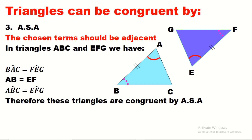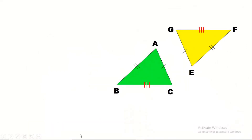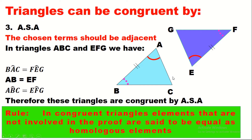Now, if you remember from the beginning, congruent triangles must have the same measures for all of their elements. What about the elements we didn't use in our proof? We say they are also equal as homologous elements — we deduce them equal, though they were not given. For example, after proving congruence by Angle-Side-Angle, the remaining angle — ACB-salant equals EGF-salant — and the remaining sides AC equals EG and BC equals GF are homologous elements.